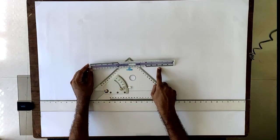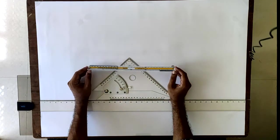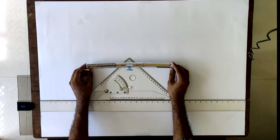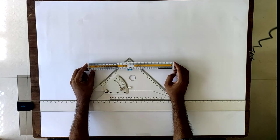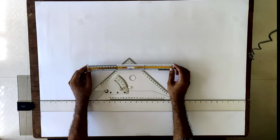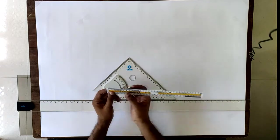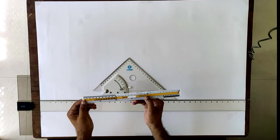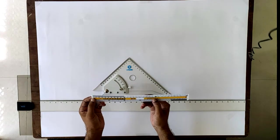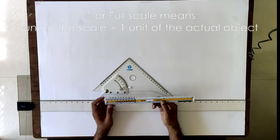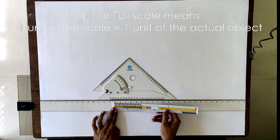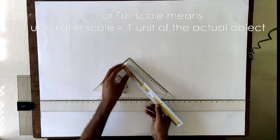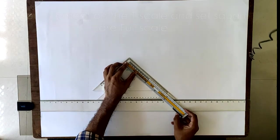We will be having a chapter on scales where we will explain why we have all these different markings. But for now just pay attention to this edge where it is written as full size or one is to one. That means it has the exact same dimensions as the scales that you have been using till now, like in the T-scale.